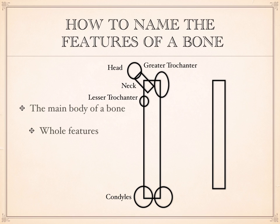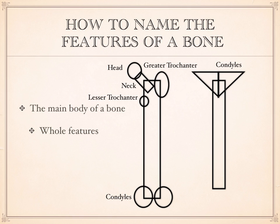The tibia is similar — it's a long, rod-shaped bone. It also has two whole features at its proximal end. They're not shaped quite so round; they're a little flatter, but they're still referred to as condyles. You can see them from the front and you can see them from the back. It also has a very prominent little hook down on the medial side of its distal end.